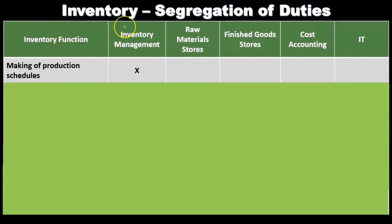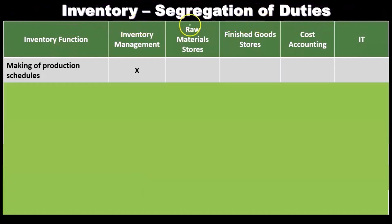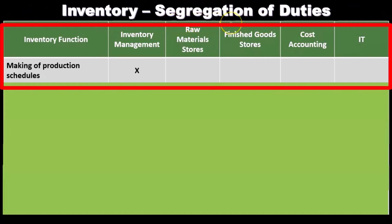Here we have our segregation of duties now posted in a table format. We have the function listed, and then the areas involved — including inventory management, raw materials, finished goods, storage, cost accounting, and IT — each doing different things.